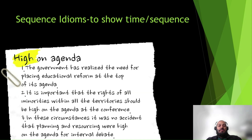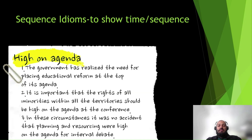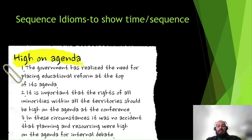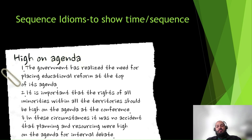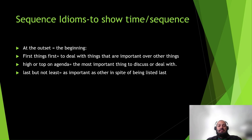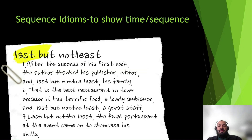Next is 'high on the agenda' or 'top of the agenda,' meaning the most important thing to discuss or deal with. For example: 'The government has realized the need for placing education reform at the top of its agenda.' Similarly: 'In each of the schools, the library was clearly still high on the agenda for forward planning and review.' So these are some examples for sequence — this is high on our agenda to get this work done.